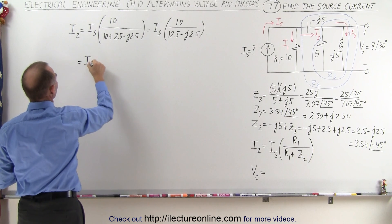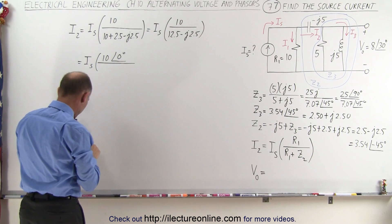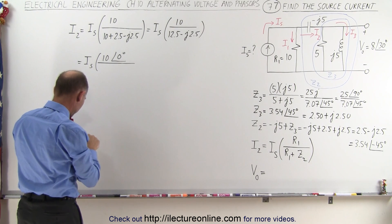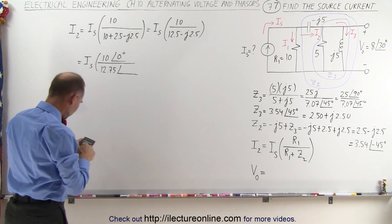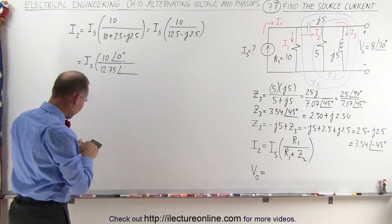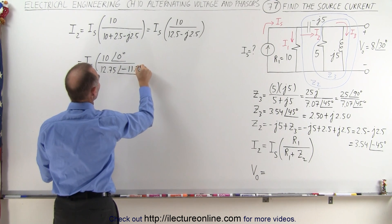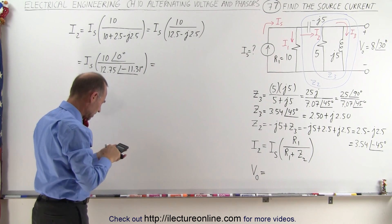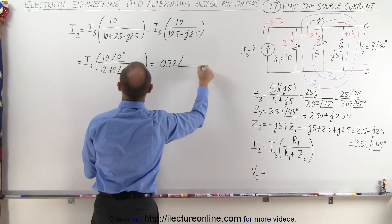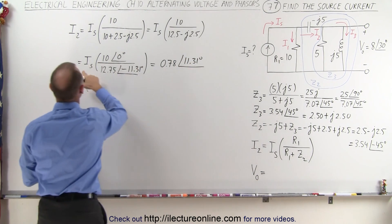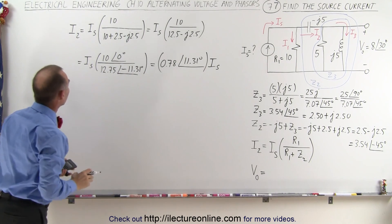To do the division we convert to magnitude and phase angle format. This equals I_S times 10 with a phase angle of 0 degrees, divided by the magnitude of 12.5 squared plus 2.5 squared — taking the square root gives 12.75 — with a phase angle of the inverse tangent of 2.5 divided by 12.5, which is 11.31 degrees, and that is minus 11.31 degrees. So 10 divided by 12.75 equals 0.78 with a phase angle of plus 11.31 degrees. So I2 equals I_S times 0.78 at 11.31 degrees.